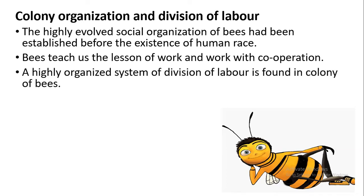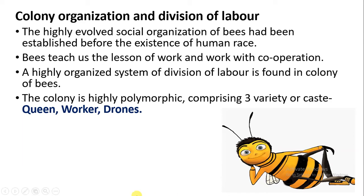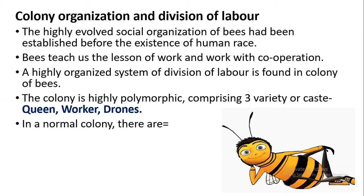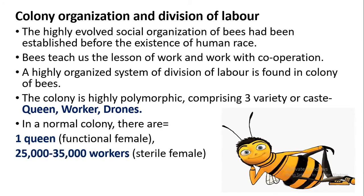Honeybees have a highly organized system where there is division of labor. The work is divided among members of the colony. The colony is highly polymorphic, meaning at the adult stage you will see three morphologies present: queen, worker, and drone. These are the three varieties or three castes. In one colony there is one queen, who is a functional female, about 25,000 to 35,000 worker bees who are sterile females, and at least 300 to 500 males, that is the drones.